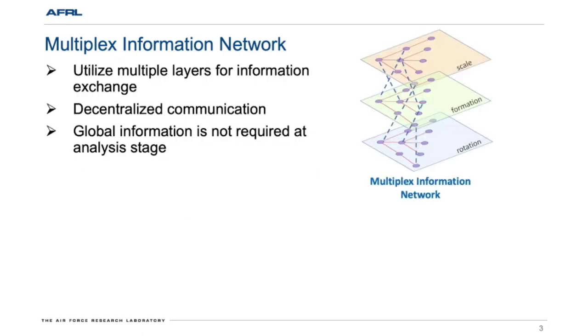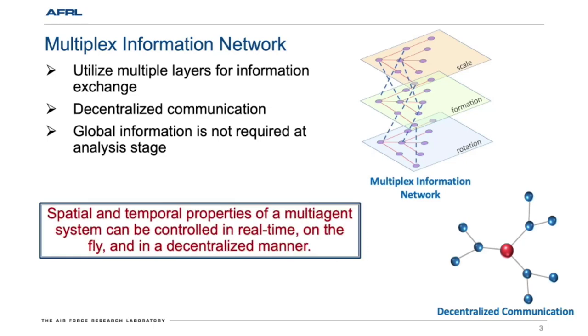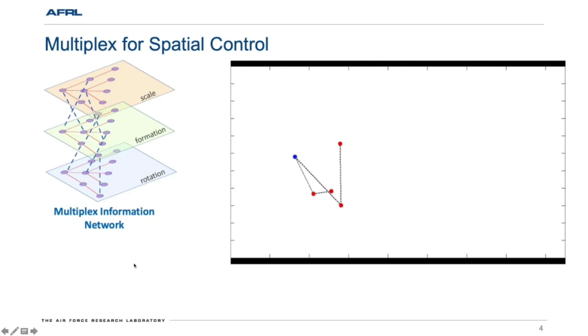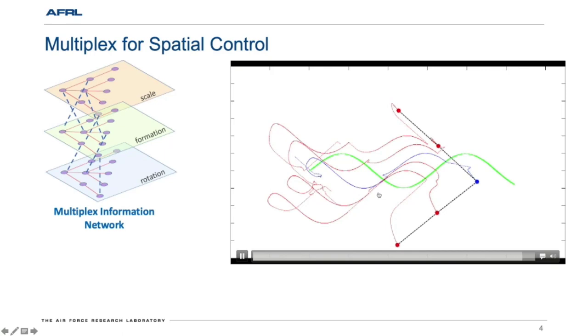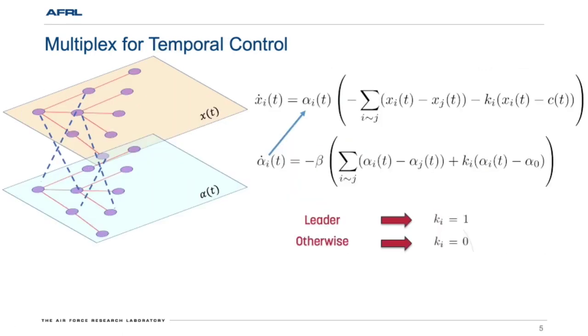In particular, Multiplex Information Networks utilize multiple layers for information exchange, which results in decentralized communications. Global information is not required at the analysis stage. And therefore, spatial and temporal properties of a multi-agent system can be controlled in real-time, on-the-fly, and in a decentralized manner with Multiplex Information Networks. We already use Multiplex for controlling spatial properties of a formation. The idea of Multiplex is that we have a main layer to form the desired formations and track the target. And we also have several secondary layers to exchange the information on scaling factor and rotation angle. As you can see here, we have a group of five agents forming the desired formations. They also track the target and maintain a desired distance away from the target. Also, during the flight, the size of the formation can be changed.